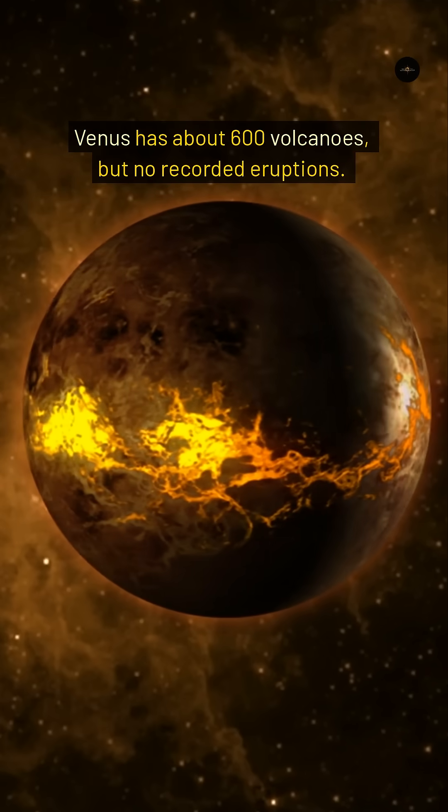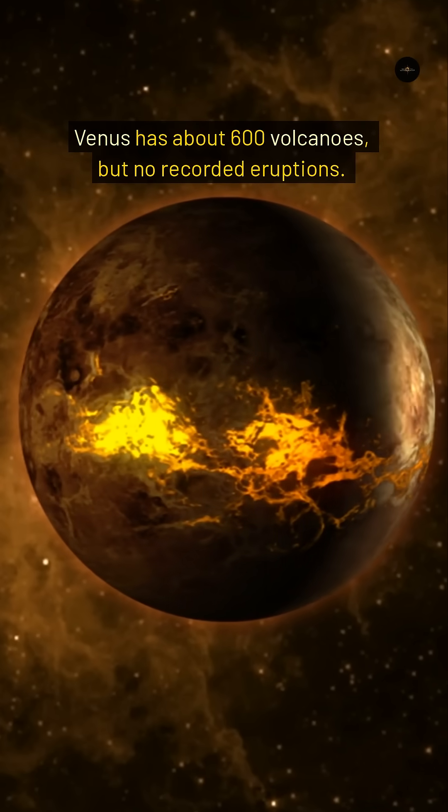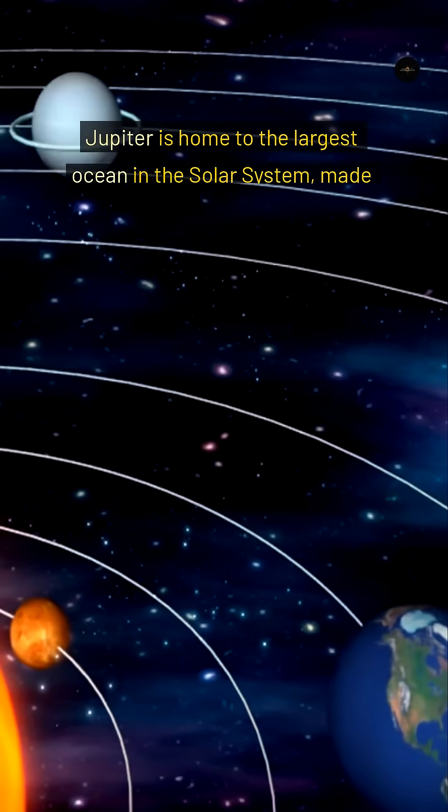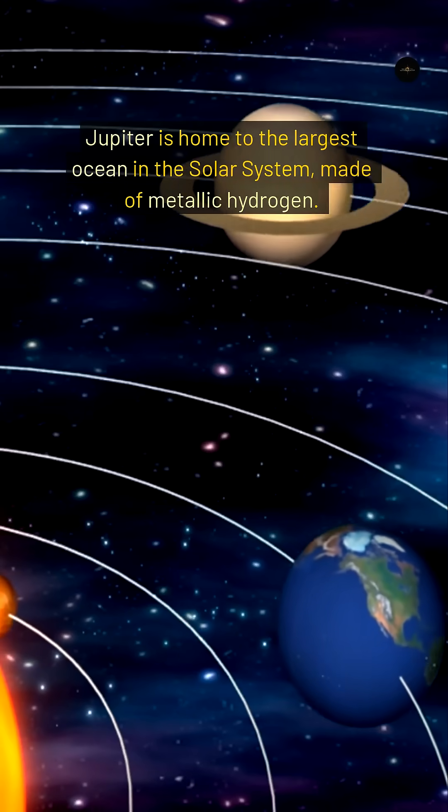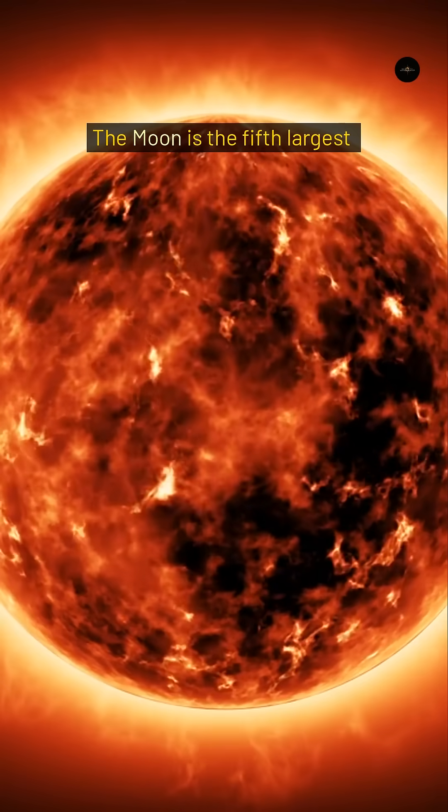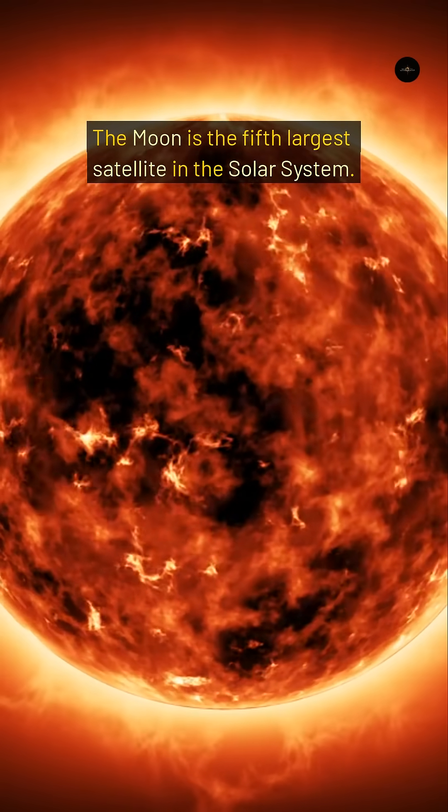Venus has about 600 volcanoes, but no recorded eruptions. Jupiter is home to the largest ocean in the solar system, made of metallic hydrogen. The Moon is the fifth-largest satellite in the solar system.